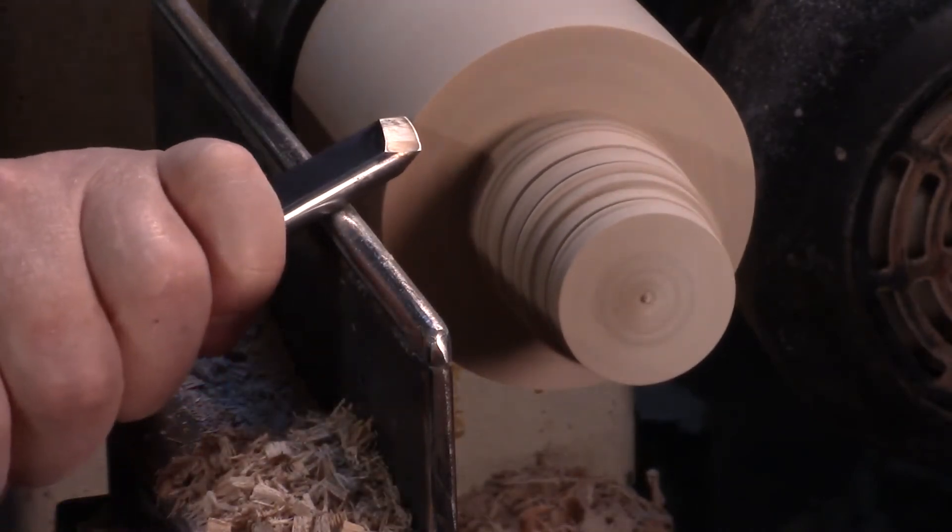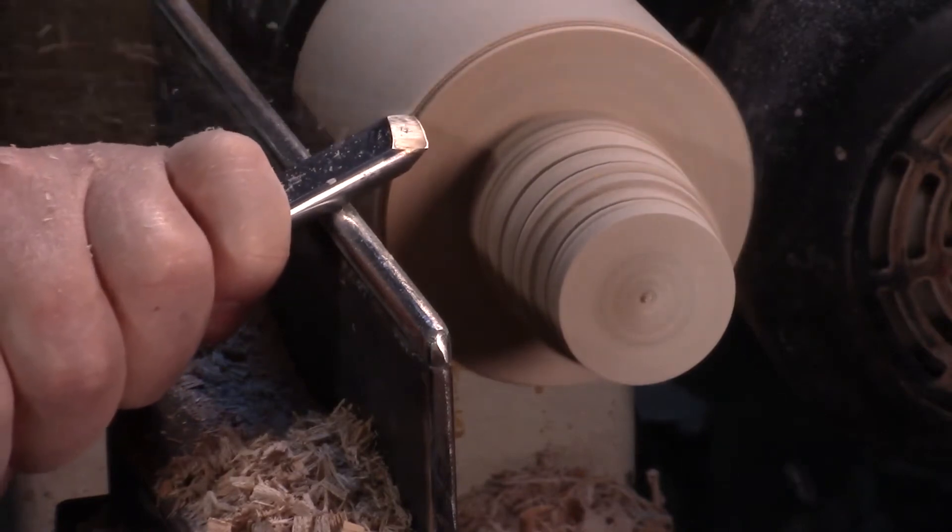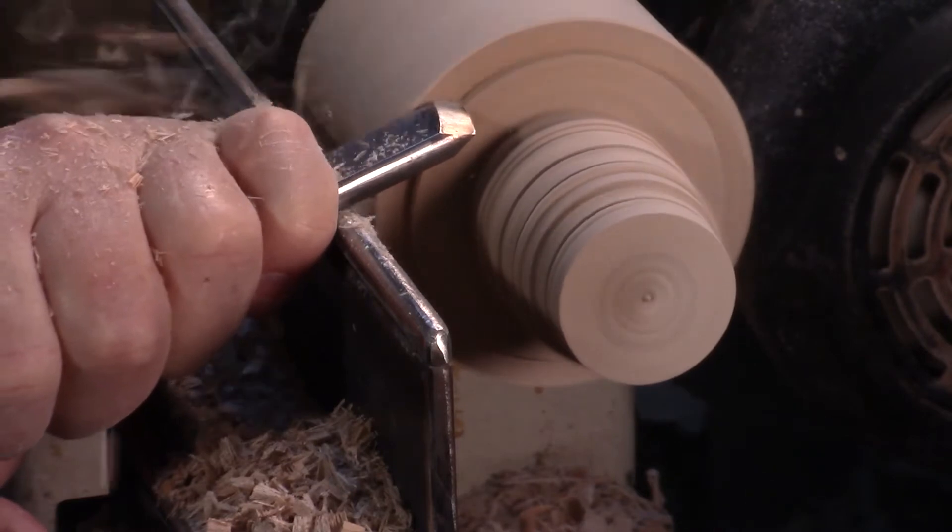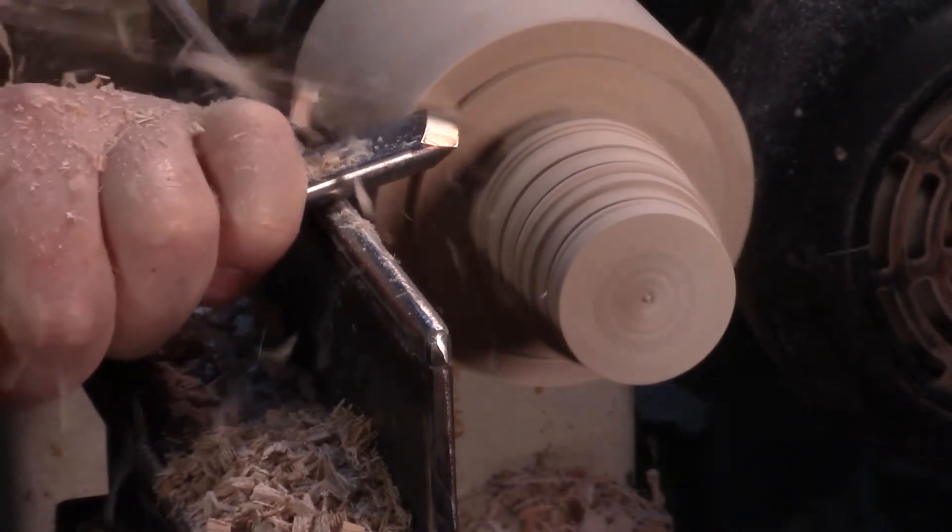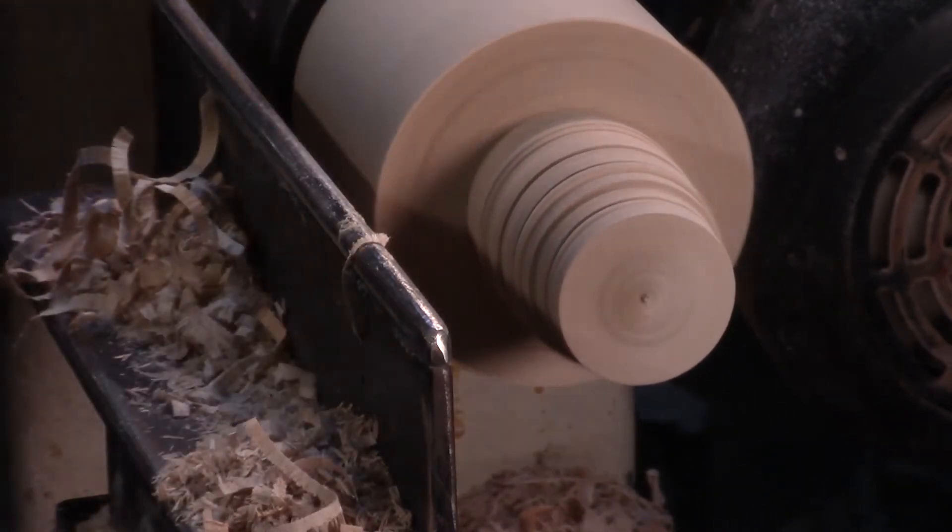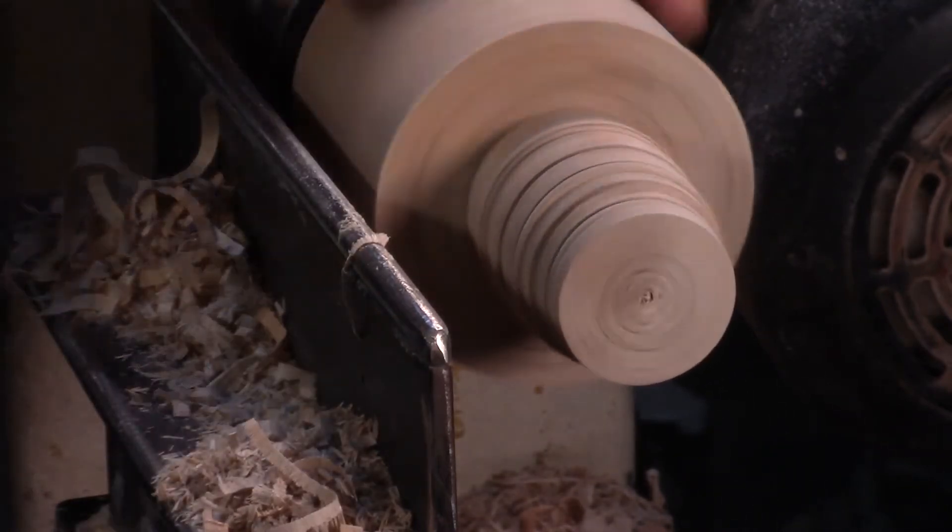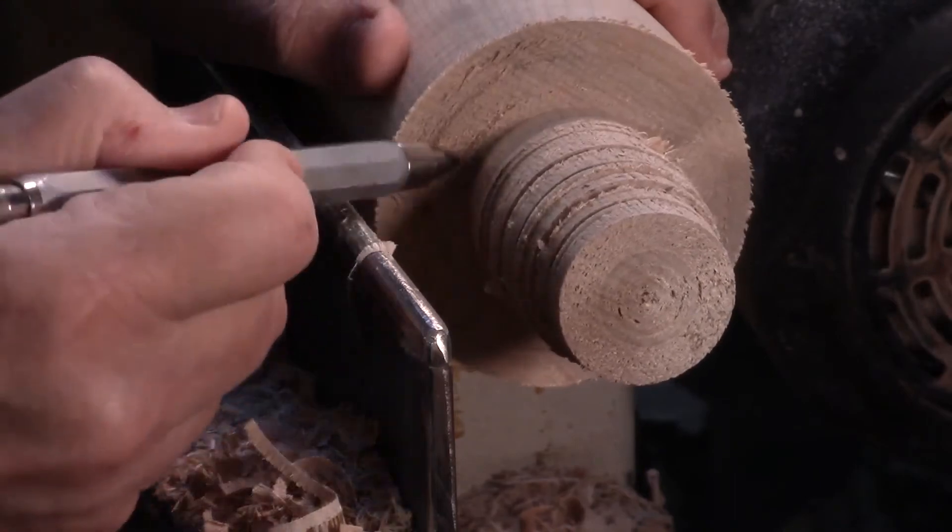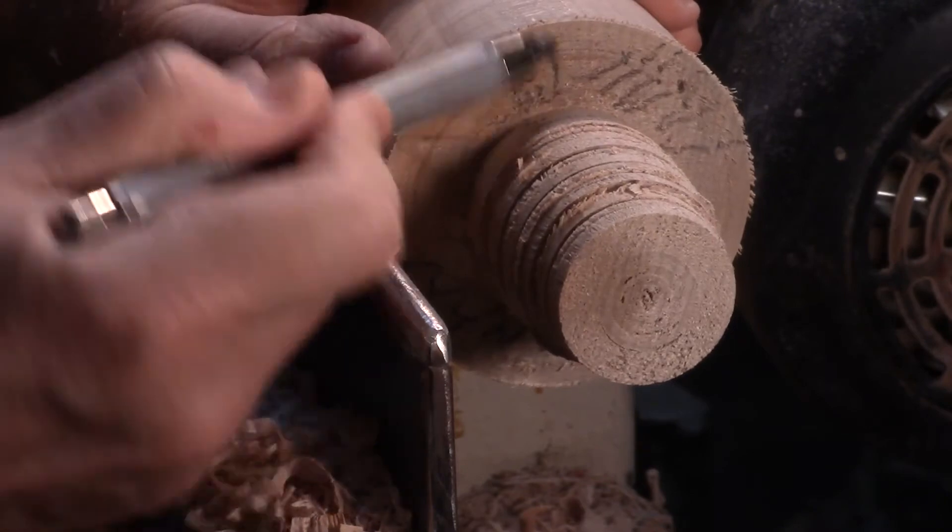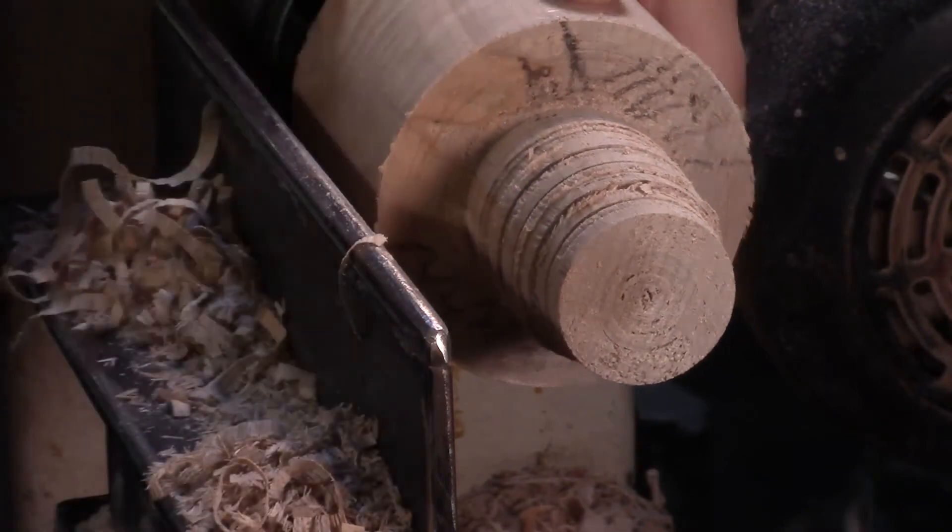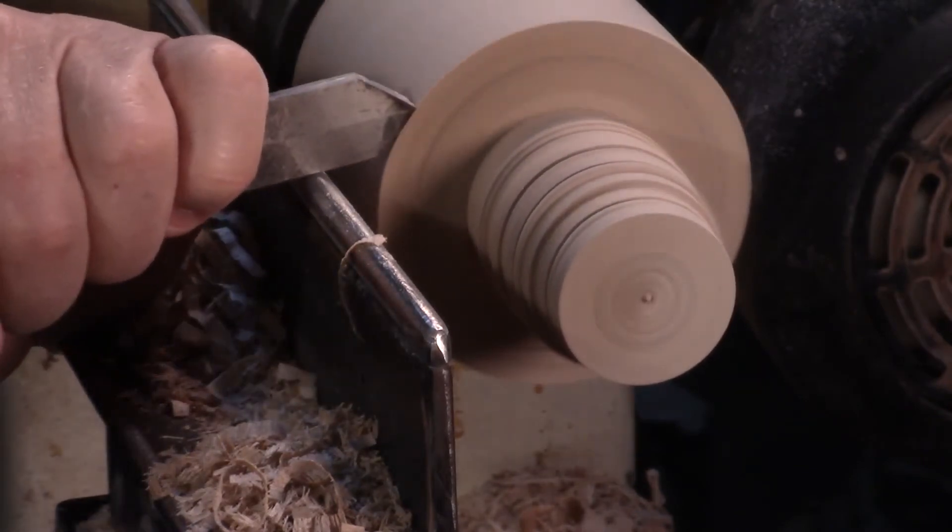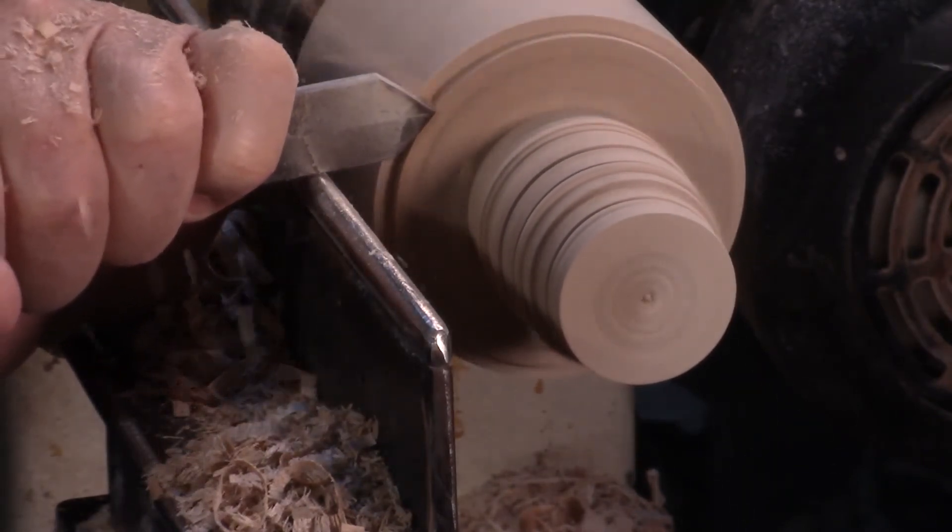Now this will be a peeling cut with a skew chisel. Now let's take a look at the surface left by the peeling cut on the skew chisel. Not real good. Pretty much equivalent to the diamond parting tool.